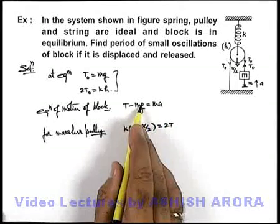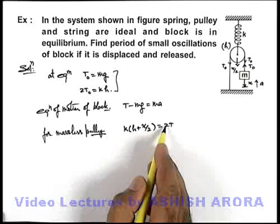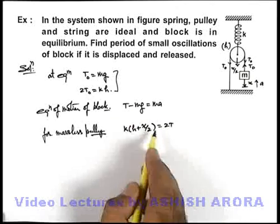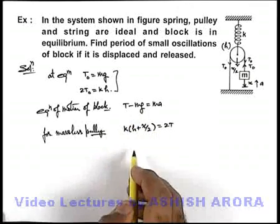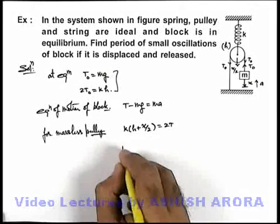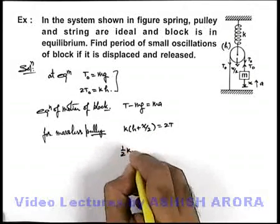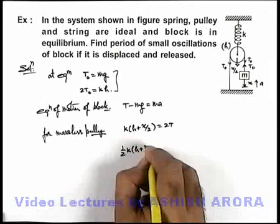Now from these two equations if we substitute the value of tension here, you can see what we'll be getting. In this situation we'll be getting half of k(h + x/2).